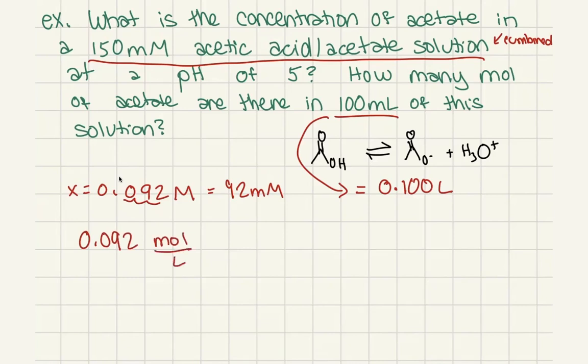Now what 0.092 molar means is that we have 0.092 moles per liter. And now we're saying, okay, we have 100 milliliters. So that's going to be times 0.1 liter is going to equal 0.0092 moles, which is the same as saying 9.2 millimoles, if we wanted to go that way.